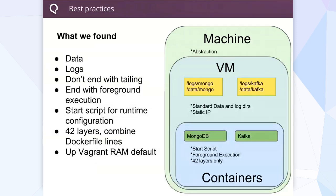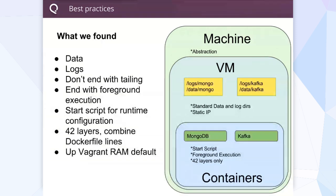Don't end with tailing — if you want to stop a Docker container, you want to end with a foreground execution, which makes it shut down a little bit easier. The 42 layers limit: keep in mind that a Dockerfile can only run 42 layers, though we hear that's going to be removed in future versions. And up Vagrant RAM by default.